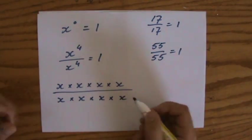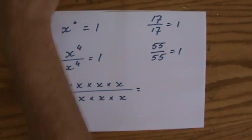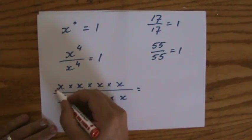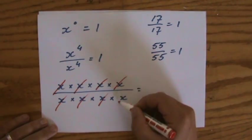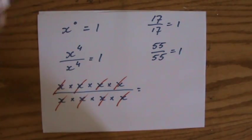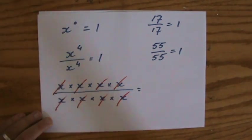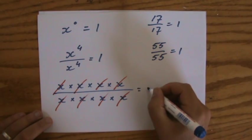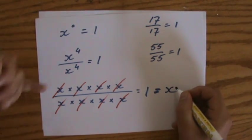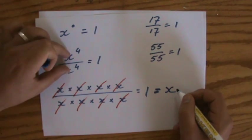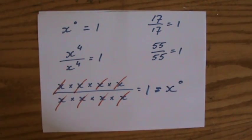If I write that out: x times x times x times x divided by x times x times x times x, all the common factors cancel. What is left? Don't say 0 — the coefficient you don't see it, but the coefficient is 1. And by the second law of indices, 4 minus 4 gives x to the power 0, which equals 1.